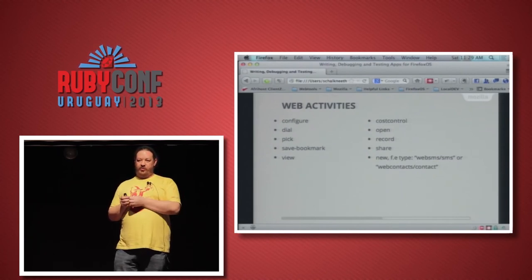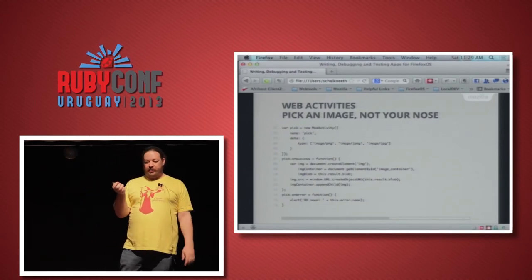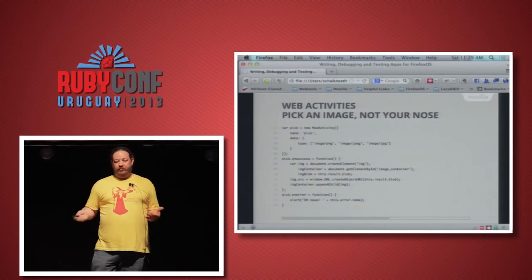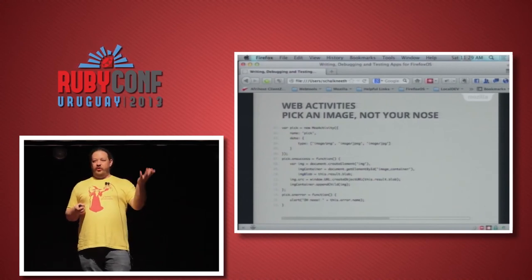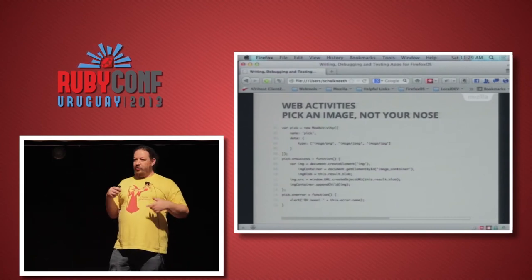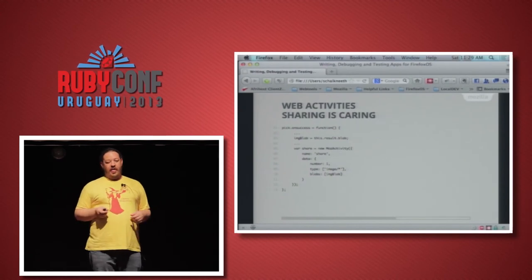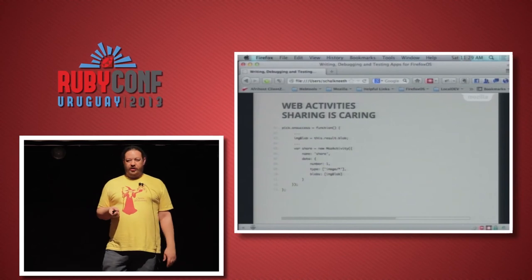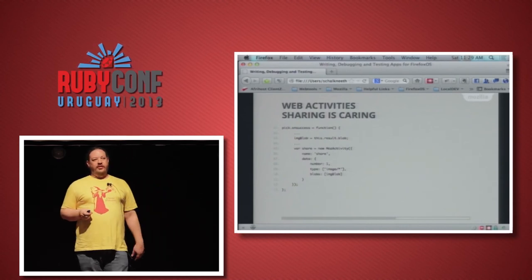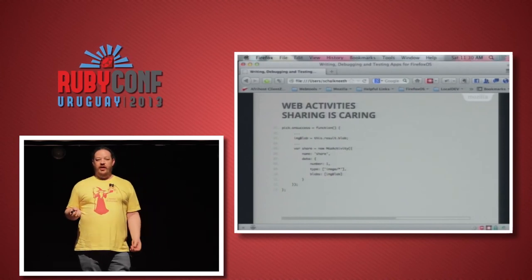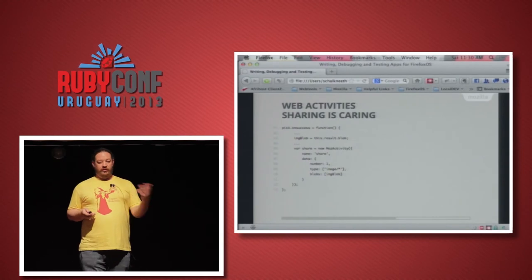The pick activity asks the system if there's an app that can handle camera access, prompts the user for permission, and if they agree, the result gets returned to your app. Using pick to get an image: you specify the type and the data you're interested in, bind to success and error listeners. On success you get a blob back — you can convert it to an object URL and use that as the image source. You can also combine activities: a share activity lets you say 'I want to share one image' and the system finds apps registered as share handlers for images, prompts the user, and returns the result to your app.